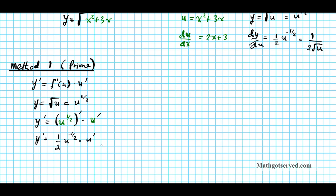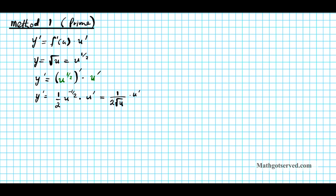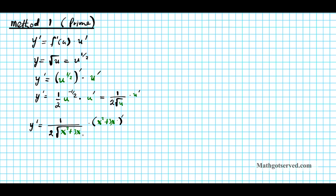This can be written as 1 over 2 root u times u prime. Now that we're done applying the chain rule, we're going to reinsert the value of u into the equation. U is x squared plus 3x, so y prime is going to be 1 over 2 times the square root of x squared plus 3x, times the derivative of x squared plus 3x.